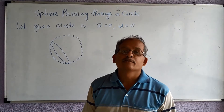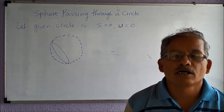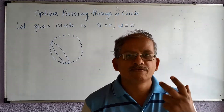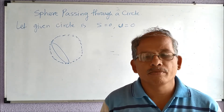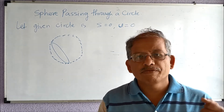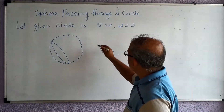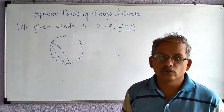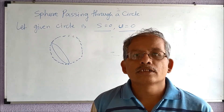In the last lecture we saw how a circle is created in three dimensions — you take a sphere and cut it by taking an intersection with a plane. What you obtain is a circle in three dimensions. A circle is always obtained by a sphere's equation S equal to zero and a plane's equation U equal to zero, and both of these together give us the equation of the circle.